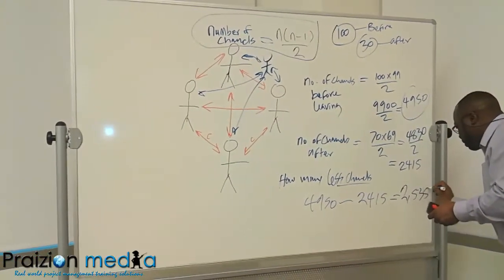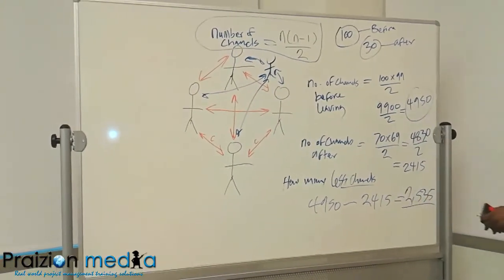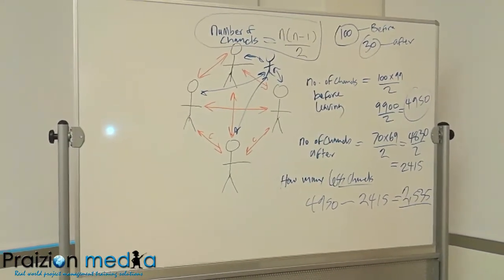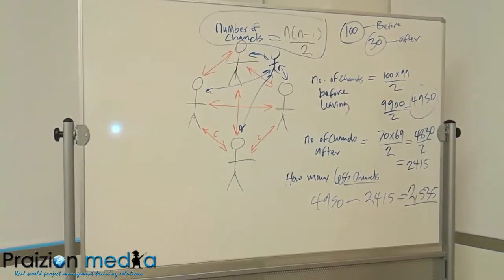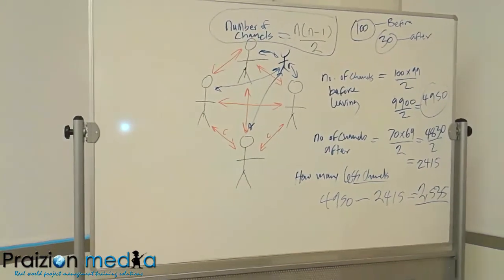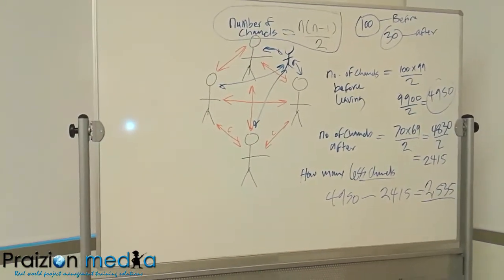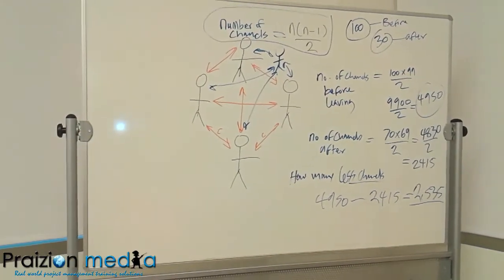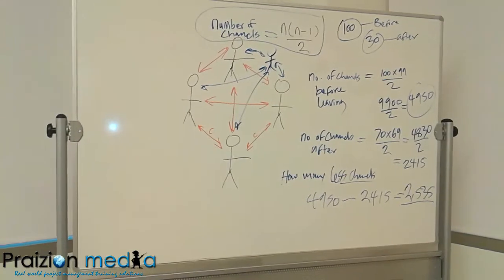There are 2,535 less channels of communication. So what was the question, Michael? What is the overall purpose in determining or having to know how many communication channels there are? That's a very good question.